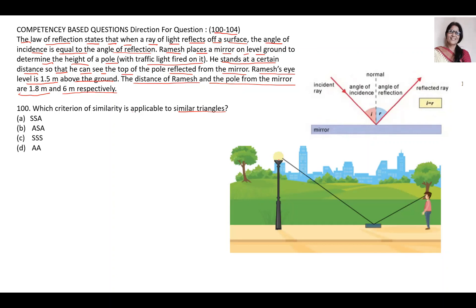Looking at the figure, Ramesh is standing. I am naming it as triangle ABP. This is 1.5 m. The distance of Ramesh is 1.8 m and this is 6 m.